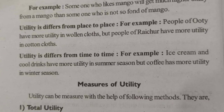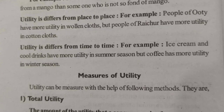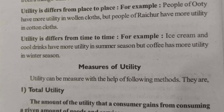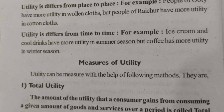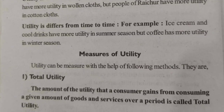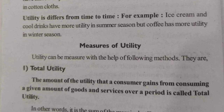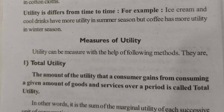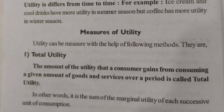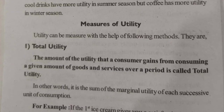Utility is a subjective concept — it changes from person to person. For example, on a cold day I don't want ice cream; I want something hot like Maggi. So I will eat Maggi, not ice cream. Utility changes time to time and place to place. In Rajasthan I will eat traditional food, but in Bangalore I will have pizza or burger.